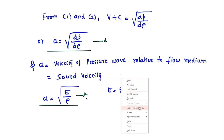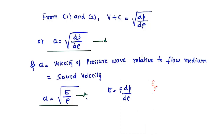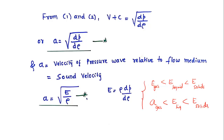The bulk modulus differs for different materials. For gases it is less than for liquids, and for liquids it is less than for solids. Consequently, the velocity of sound A in gases is lower than in liquids, which is lower than in solids. This is already known to us, and it is also evident from the equation: as E increases, A will increase.